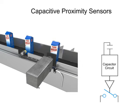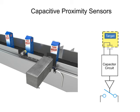Two small plates located in the front of the sensor form a capacitor. As a target enters the sensor's range, the capacitance of the two plates increases, thus causing a change in the oscillator frequency which also activates the sensor's output, either normally open or normally closed, respectively.